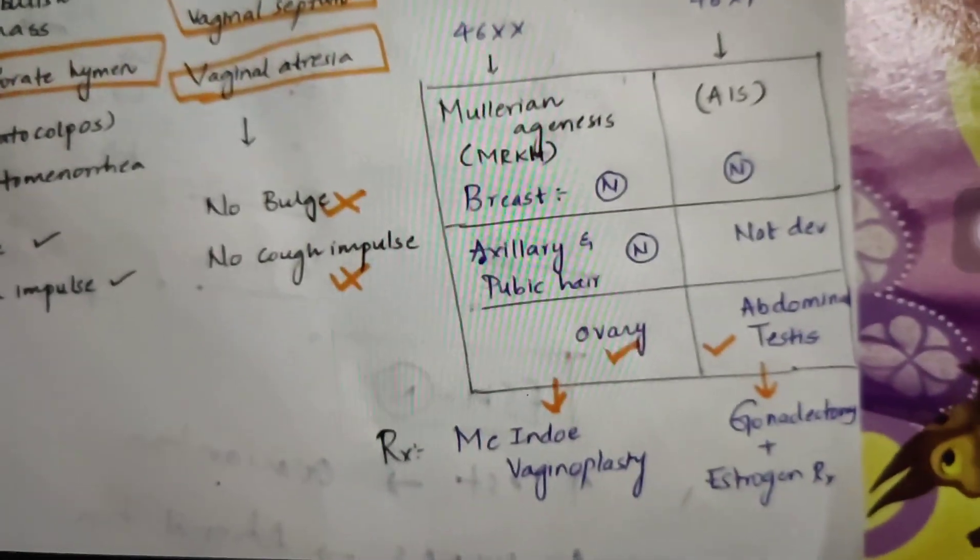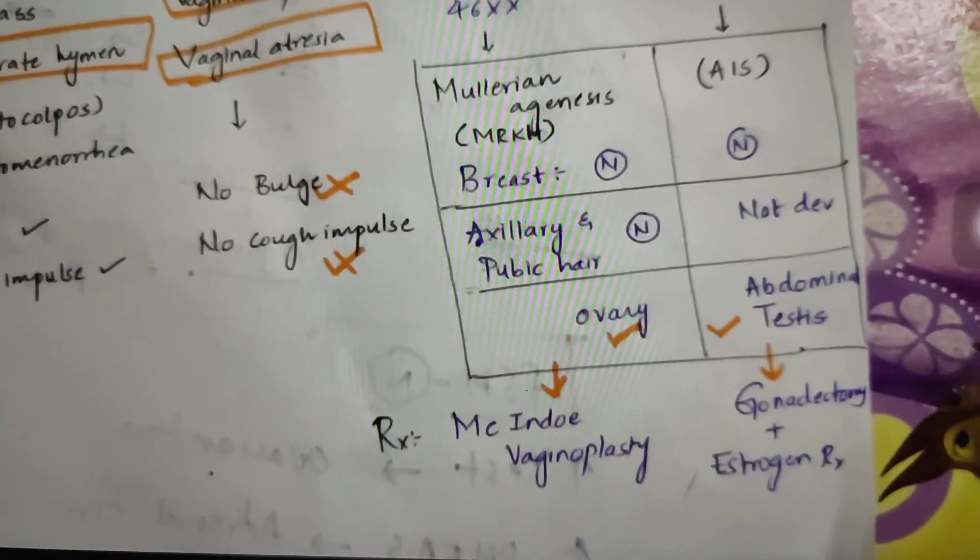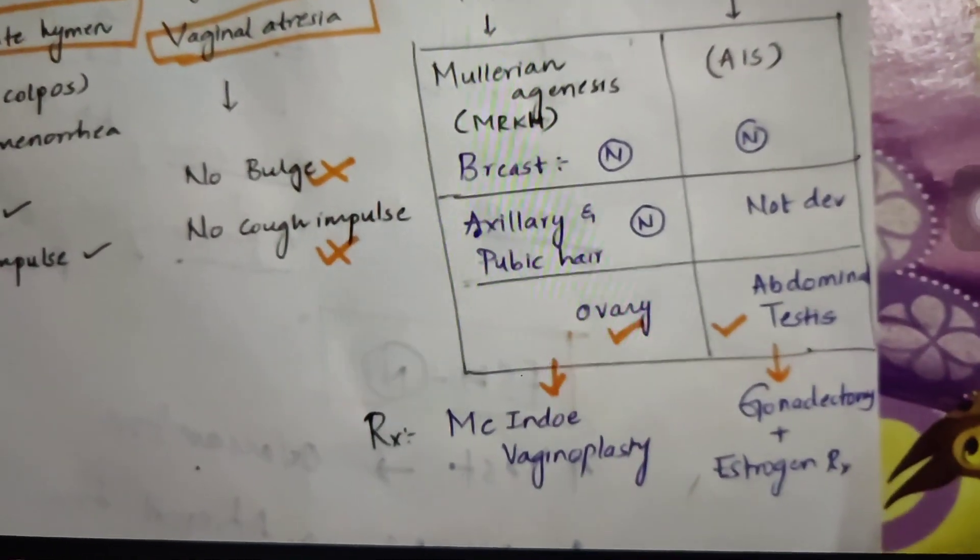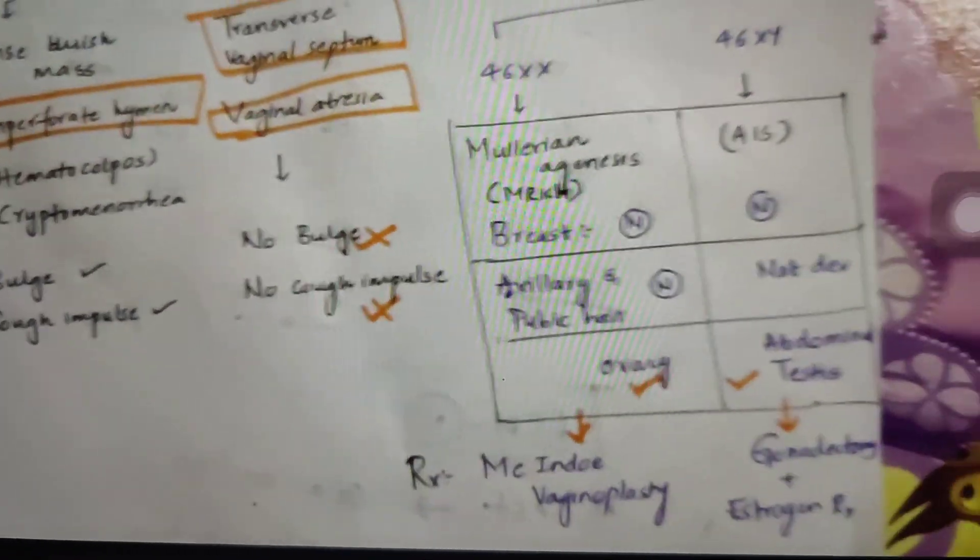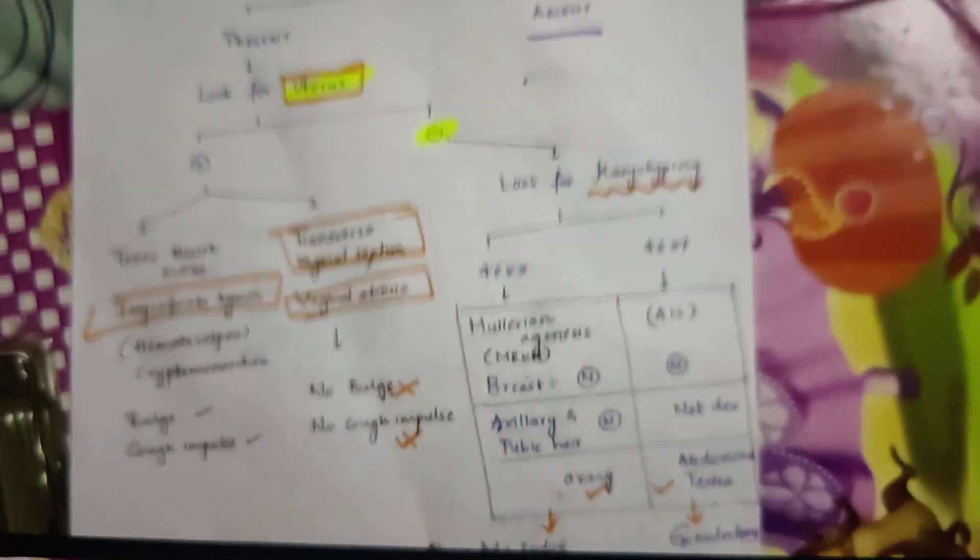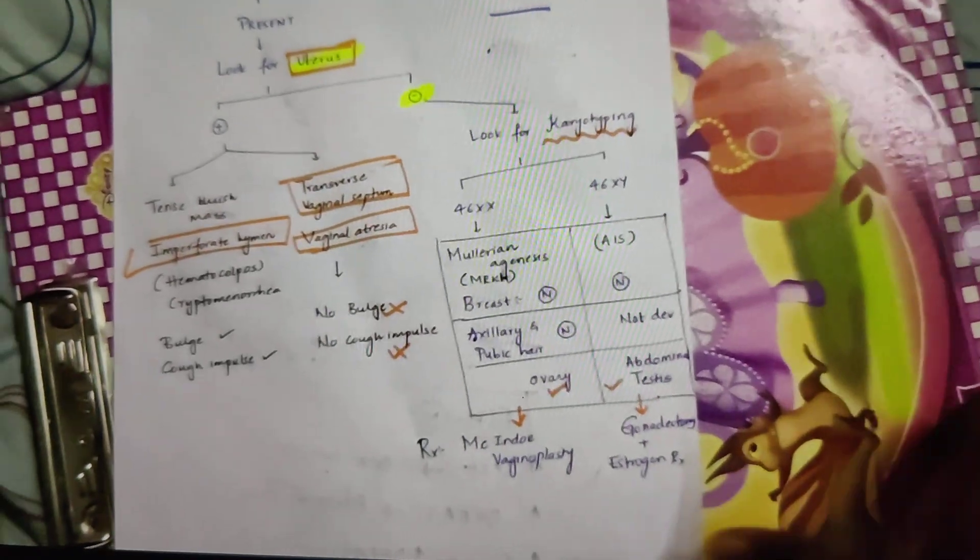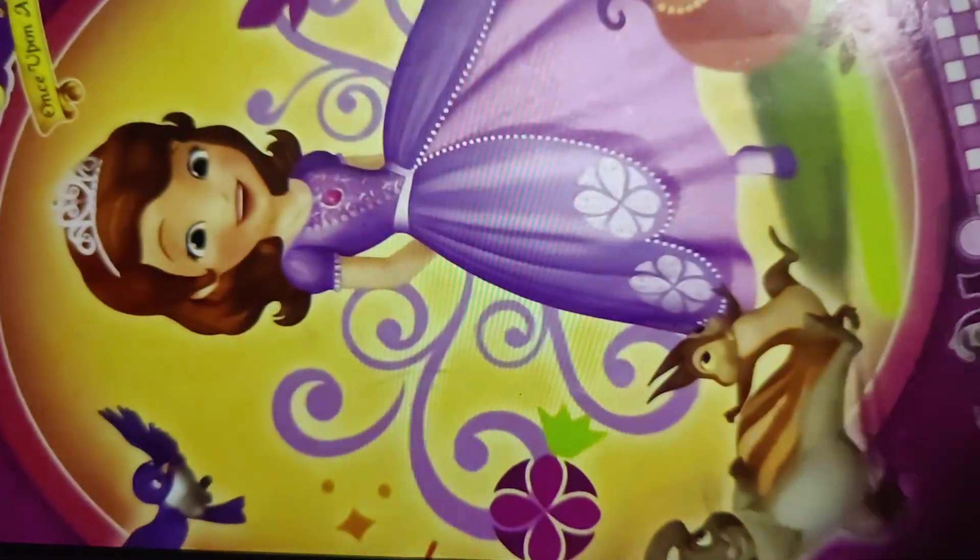Coming to the treatment of Mullerian agenesis, it is McIndoe vaginoplasty, whereas if we talk about AIS it is gonadectomy and estrogen therapy. In this entire flowchart, AIS is the most important one. So I thought of explaining about AIS in detail, like further detail.